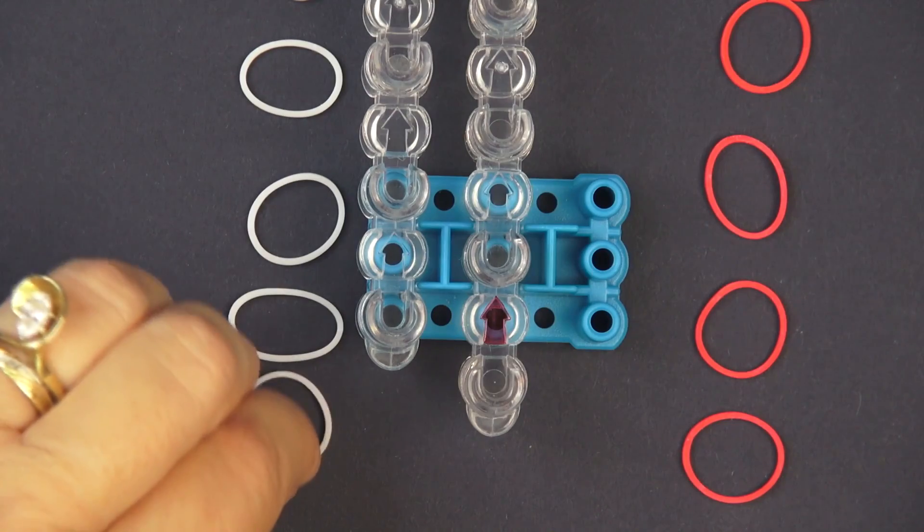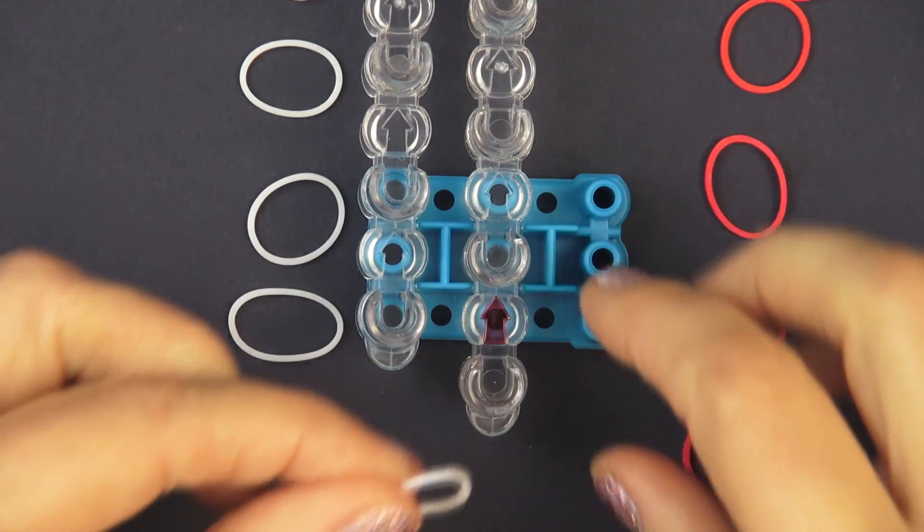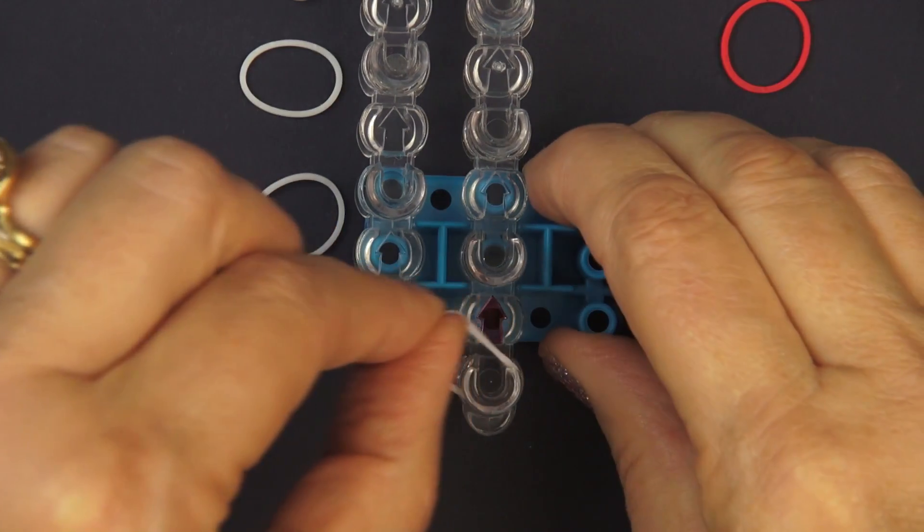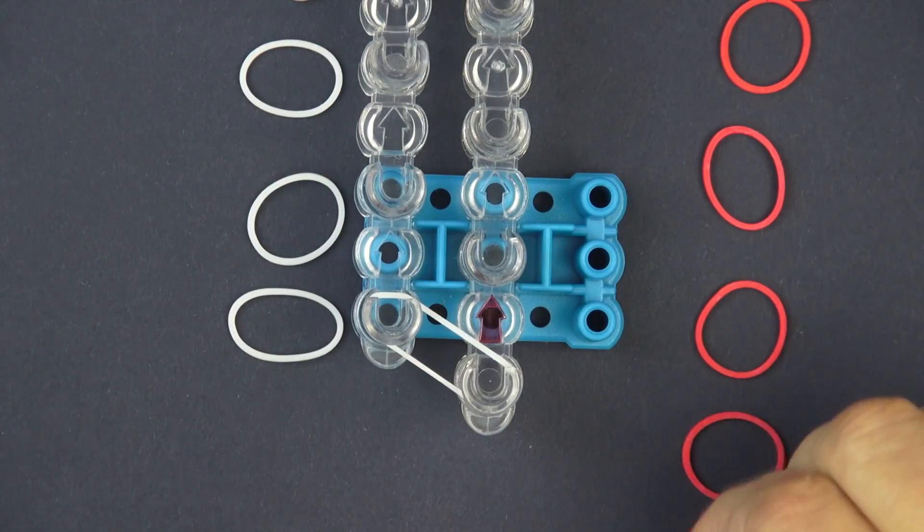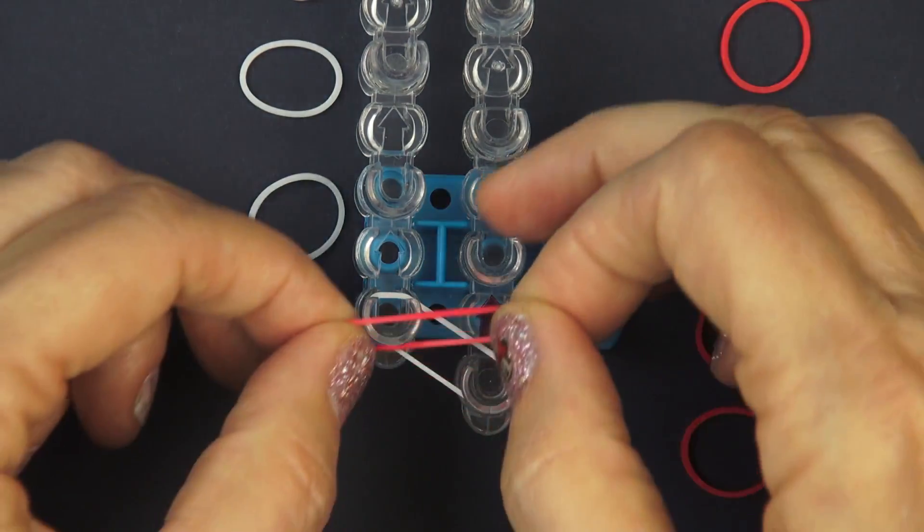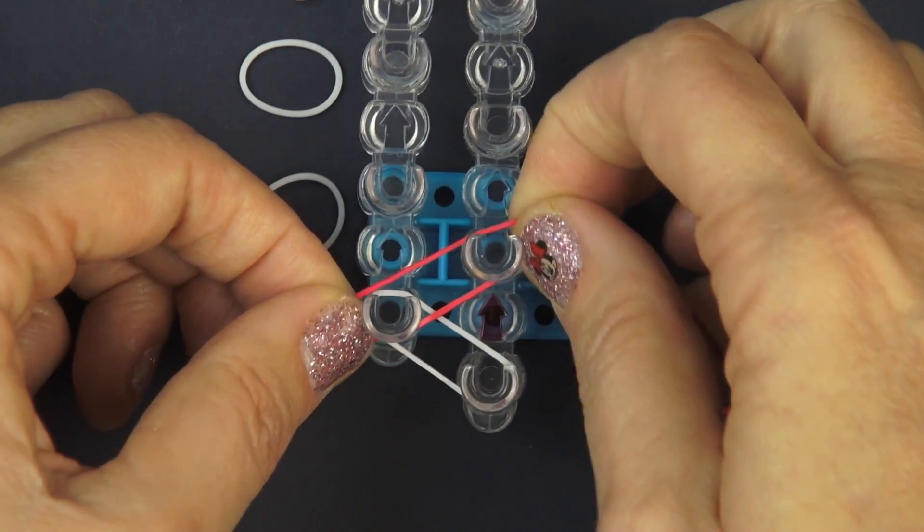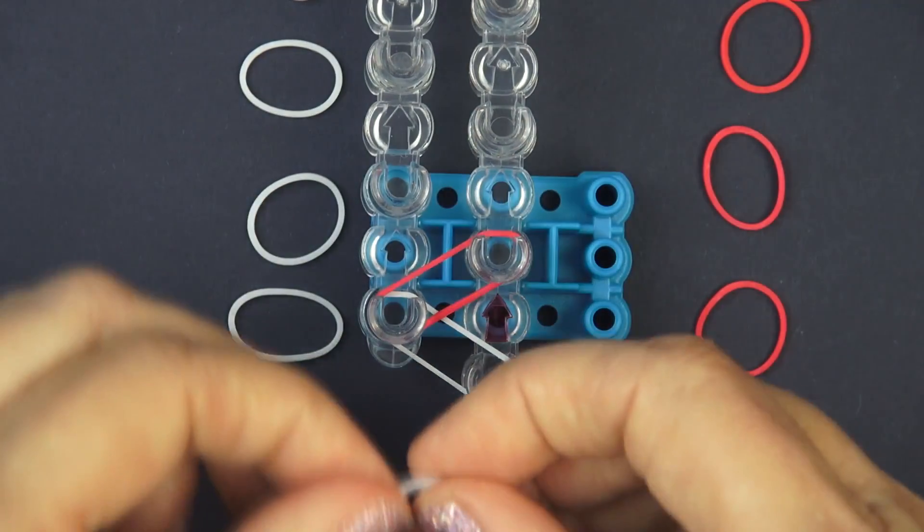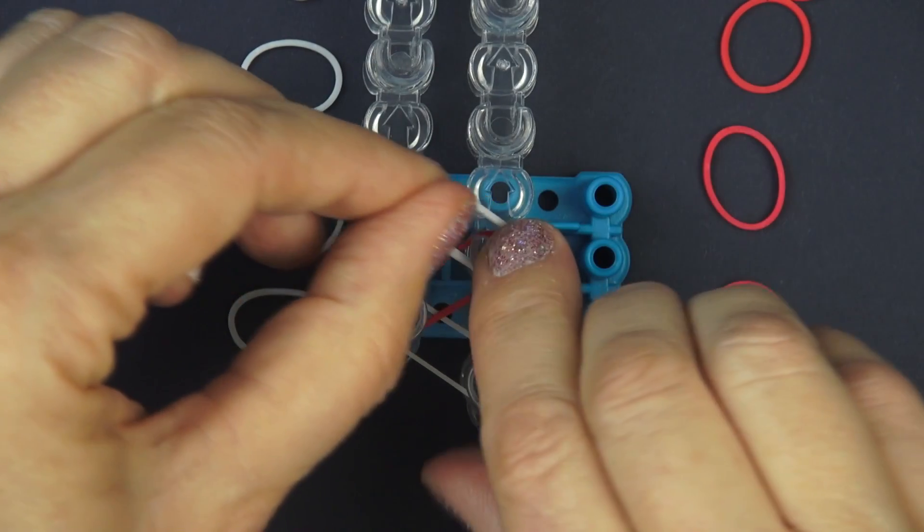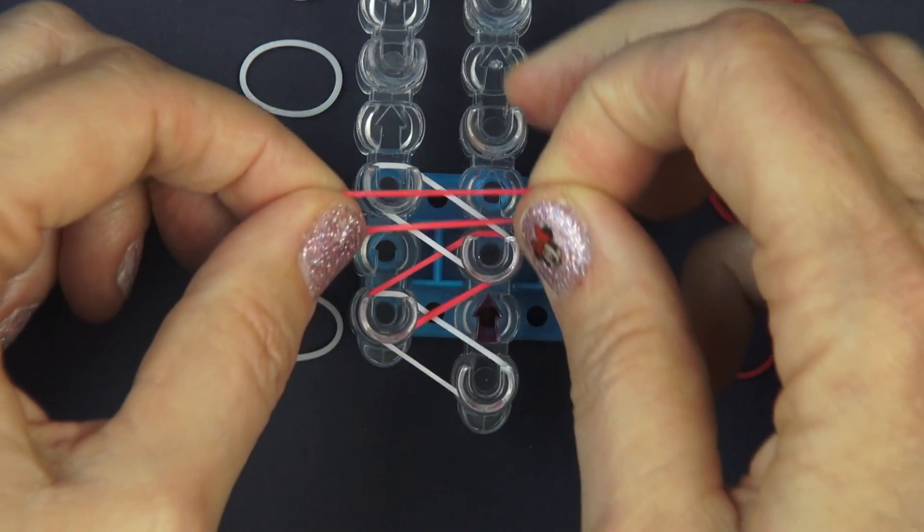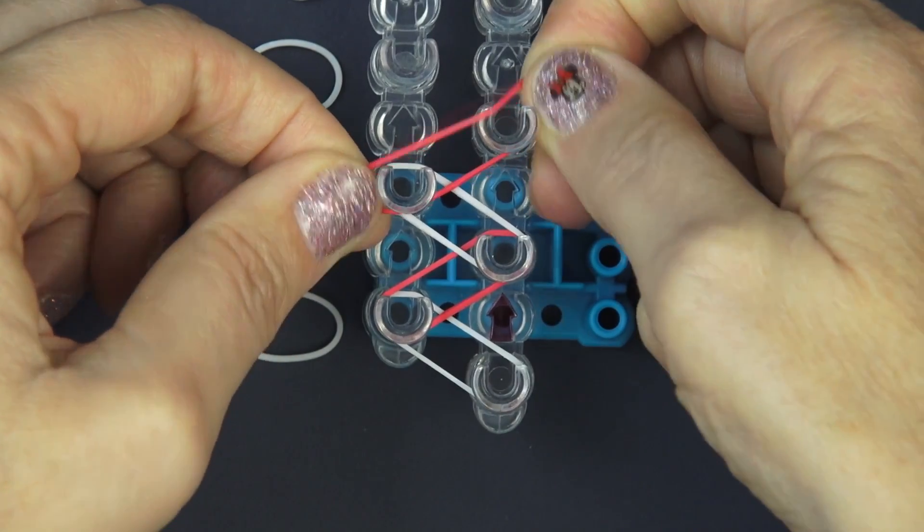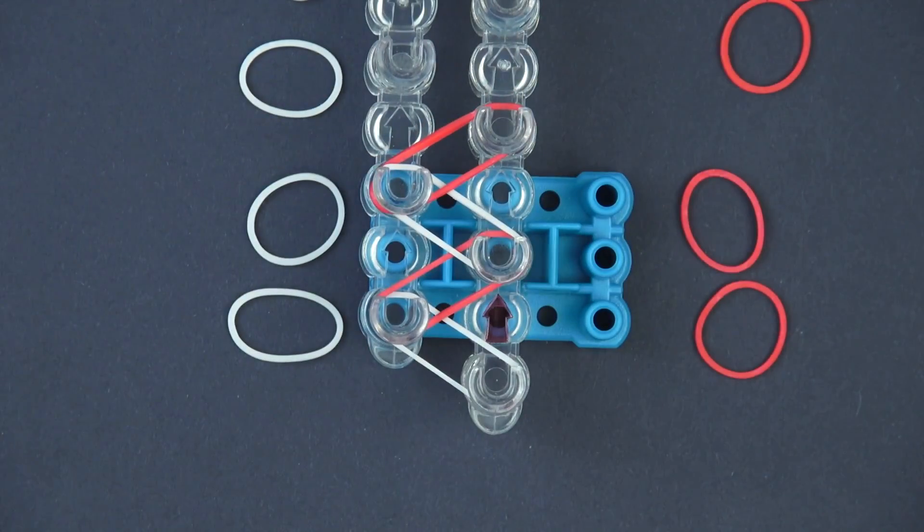Now we're ready to put the rubber bands on the loom. I'm going to start with a white rubber band and put it there. It doesn't matter if I had started with a red but next I'm going to alternate and put the red on this post, then I'm going to take a white, put it there and now the pattern is starting to become visible.